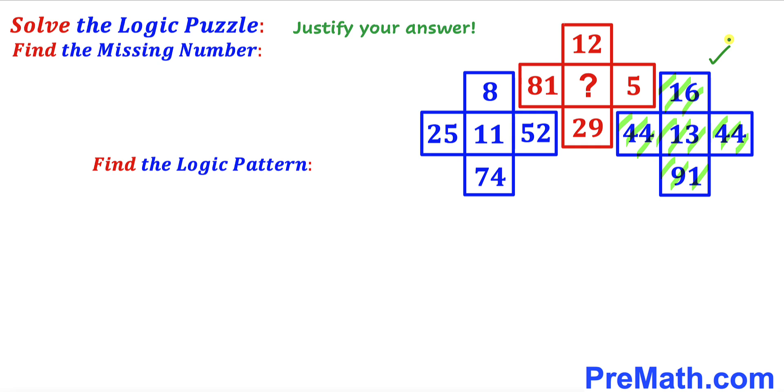Now let's focus on this right hand side blue grid as well and we are going to repeat the very same logic pattern. Let's add these three numbers: 16 plus 44 plus 44. If we add these three numbers that is going to give us 104. And now 104 minus this number 91, that is going to give us 13.